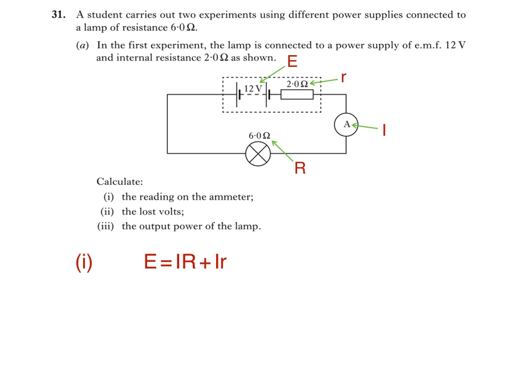To find current, we can rearrange the equation to give E equals I times (R plus r). Dividing both sides by the term in brackets, we get current I equals E divided by (R plus r). Substituting into the equation, we get 12 divided by (6 plus 2), which equals 1.5 amps.